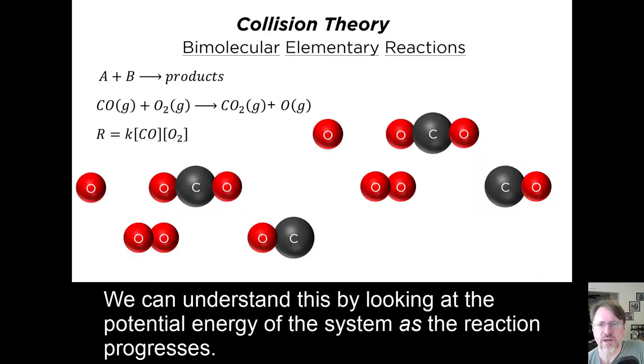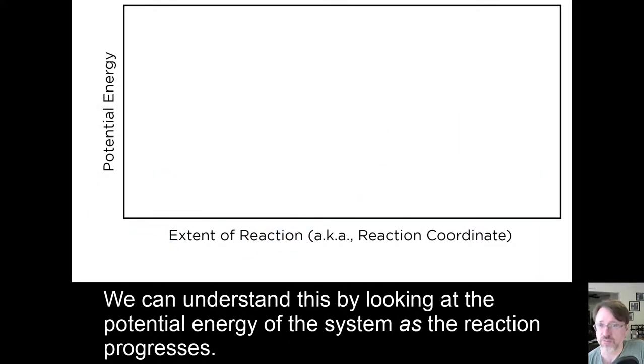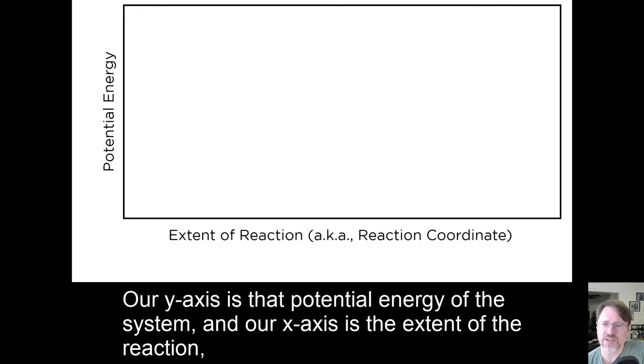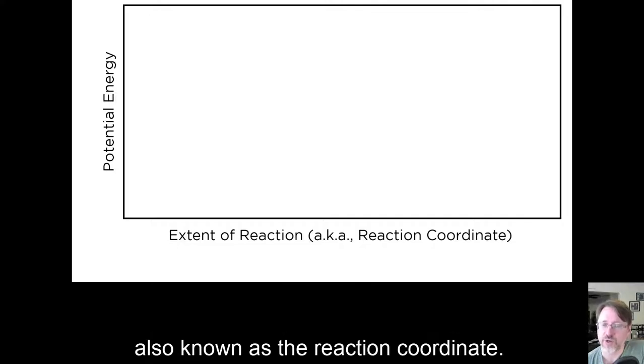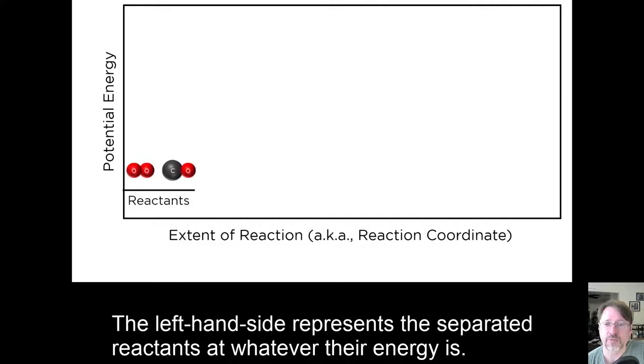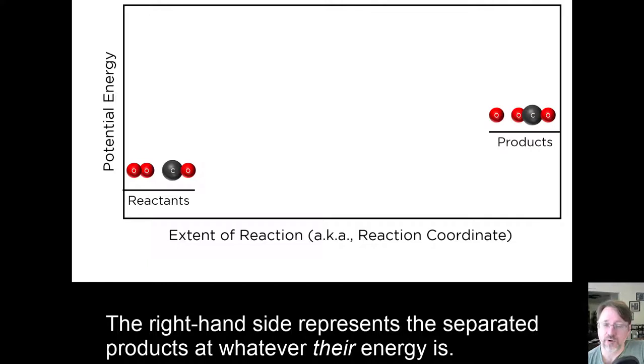We can understand this by looking at the potential energy of the system as the reaction progresses. Our y-axis is that potential energy of the system, and our x-axis is the extent of the reaction, also known as the reaction coordinate. The left-hand side represents the separated reactants at whatever their energy is. The right-hand side represents the separated products at whatever their energy is.